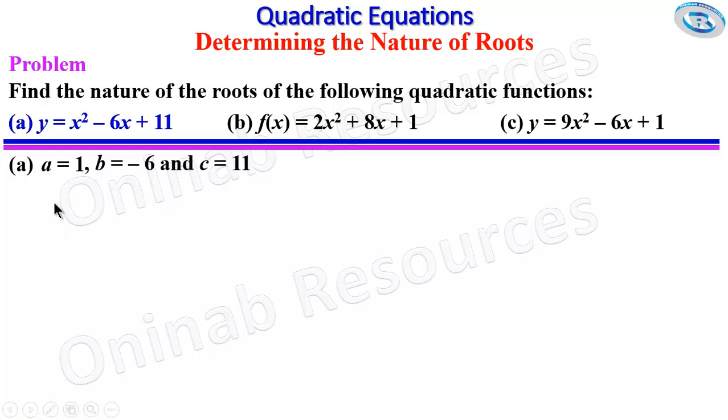We remember that the discriminant is b² - 4ac. We substitute in the values of a, b, and c in this formula. So we have (-6)² - 4 × 1 × 11.